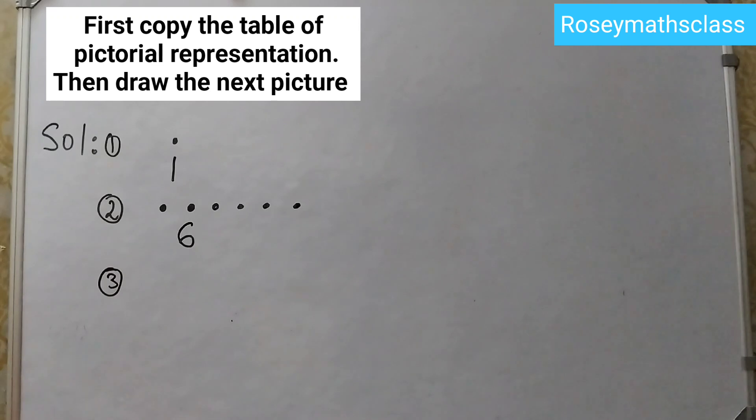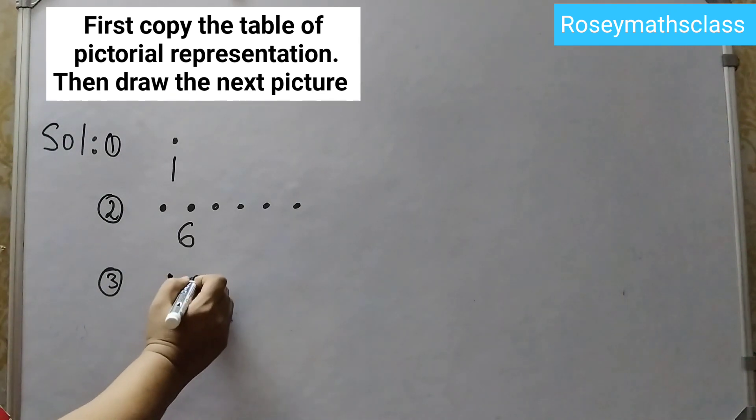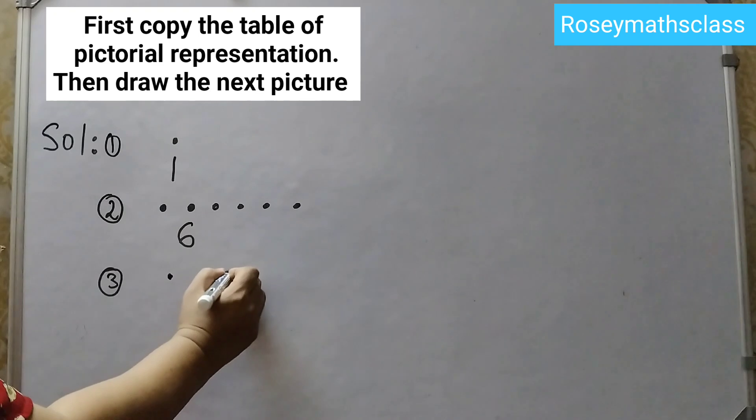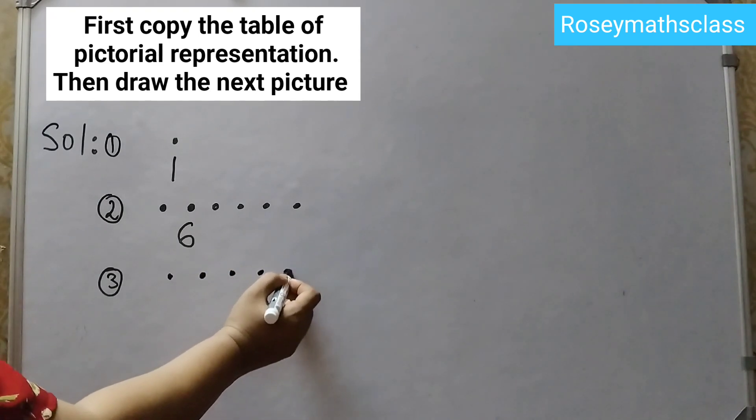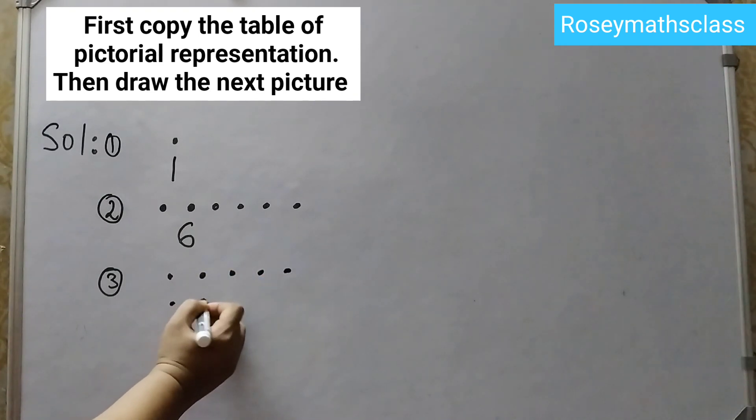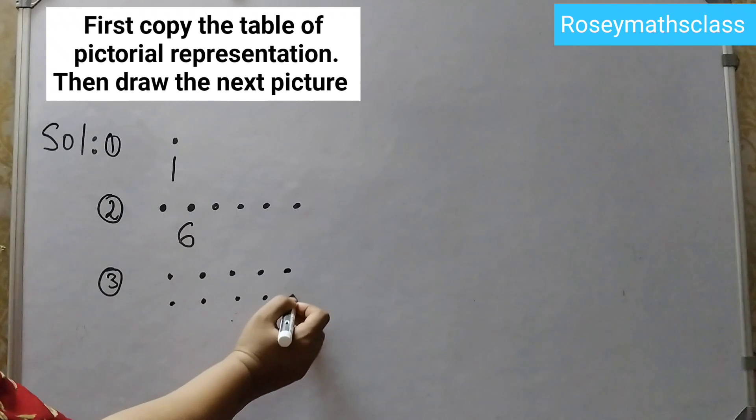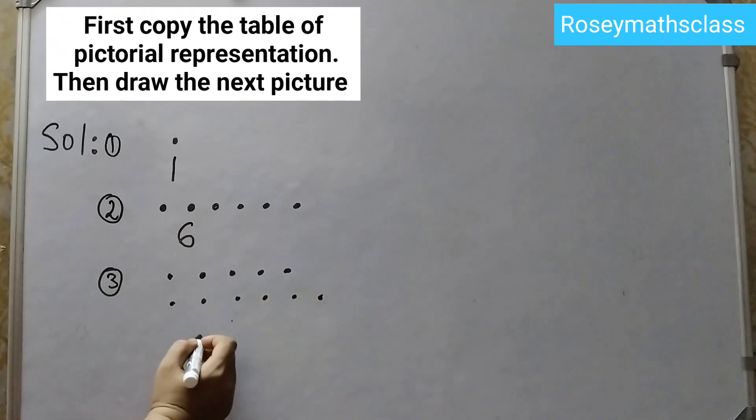Third one is odd numbers. It is given till 9, odd numbers are 1, 3, 5, 7, 9, so the next one will be 9 plus 2, which is 11. So we will draw 11 dots: 1, 2, 3, 4, 5, 6, 7, 8, 9, 10, 11. So this is 11 dots.